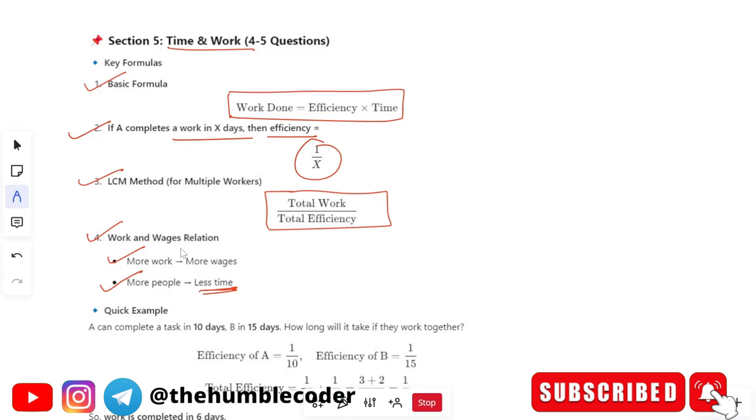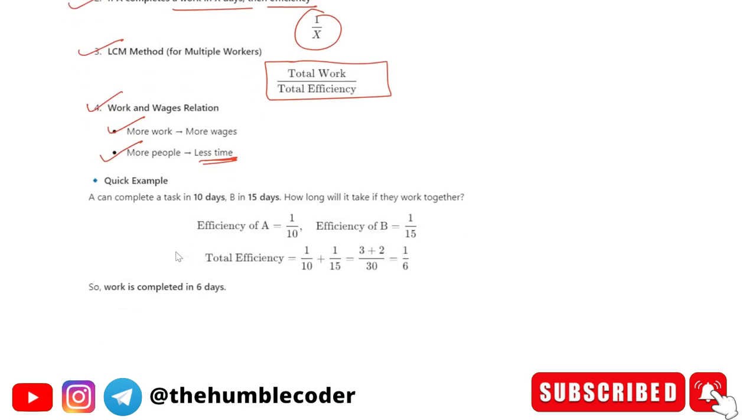See if there are more people working on a work or included in a work the wages will be higher and if there are more people you are taking in a work then the less time it will be completed. So this is the usual relation.